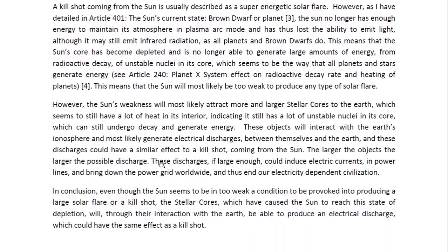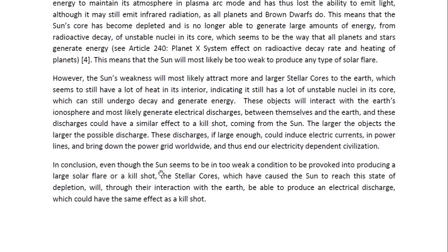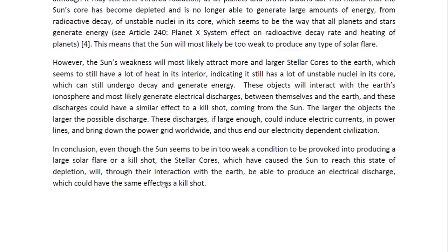However, the sun's weakness will most likely attract more and larger stellar cores to the Earth, which seems to still have a lot of heat in its interior, indicating it still has a lot of unstable nuclei in its core which can still undergo decay and generate energy. These objects will interact with the Earth's ionosphere and most likely generate electrical discharges between themselves and the Earth. These discharges could have a similar effect to a kill shot coming from the sun. The larger the objects, the larger the possible discharge. If large enough, these discharges could induce electric currents in power lines and bring down the power grid worldwide, and thus end our electricity-dependent civilization.